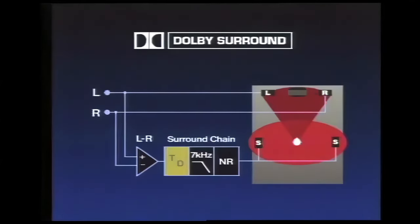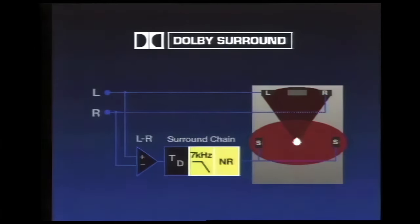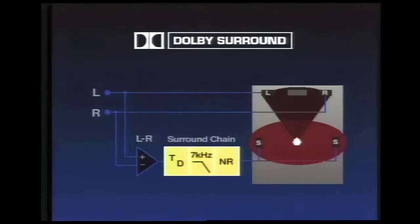All Dolby Surround decoders use time delay, filtering and noise reduction in the surround channel. They serve several purposes. Due to limited channel separation in the matrix encode-decode process, some sounds intended only for the front channels will leak into the surround channel. Time delay ensures that surround sounds arrive at your ear just after the front sounds, making any such leakage much less audible. Filtering and noise reduction help to further reduce leakage at high frequencies, so that sounds like dialogue sibilance don't become a distraction in the surround speakers. Taken together, these processes work to maintain a forward focused sound field to better complement the picture.